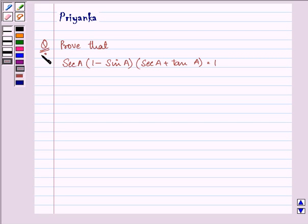Hello and how are you all today? The question says prove that secant A(1 minus sin A)(secant A plus tan A) is equal to 1.